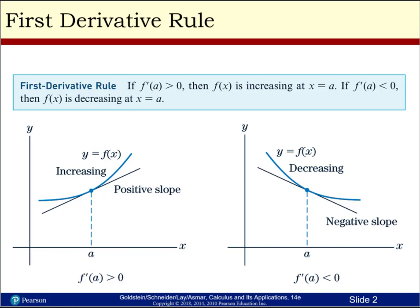First up is the first derivative rule that applies to increasing and decreasing functions. The first derivative rule says that if f prime of a is greater than zero, which means that the slope is positive, then f of x is increasing at x equal a. If f prime of a is less than zero, meaning that the slope is negative, then f of x is decreasing at x equal a. We have two examples of each: a slope that is increasing and a slope that is decreasing.